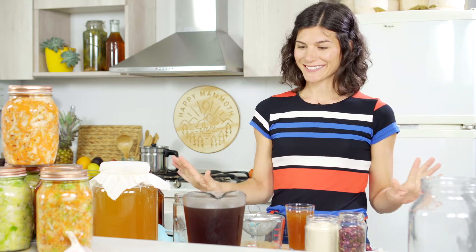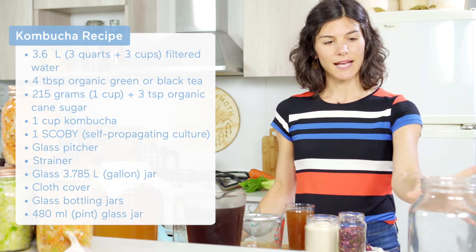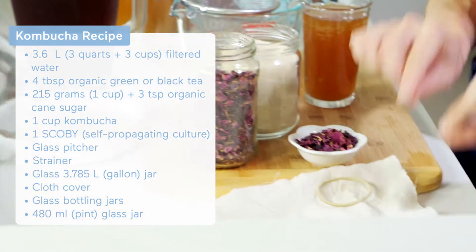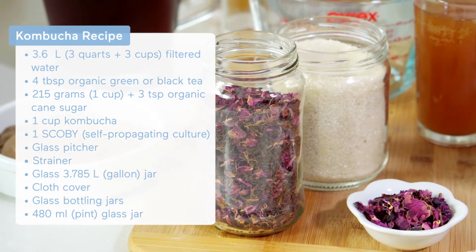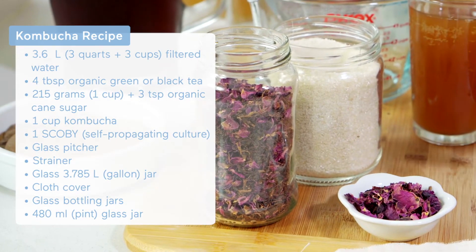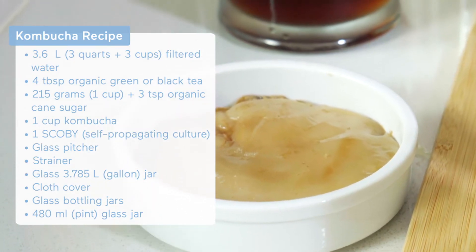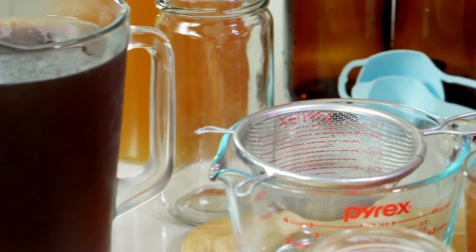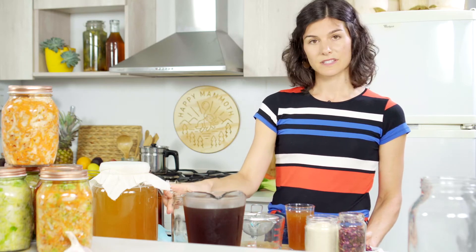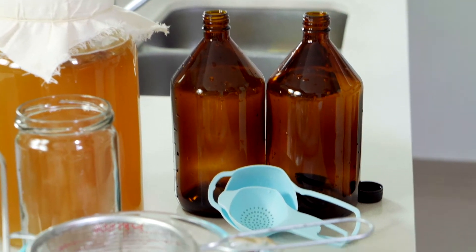Making a homebrew kombucha doesn't just mean you get to save some money — you also get to enjoy the whole process. We'll start by gathering everything we'll need: a one-gallon glass sterilized jar with a cloth and rubber band to cover it, four tablespoons of black or green tea, one cup of organic cane sugar, a cup of kombucha starter, and the SCOBY. We'll also have a pitcher, a strainer, a jar to reserve the SCOBY, a couple of glass bottling jars, and a funnel and strainer for bottling.